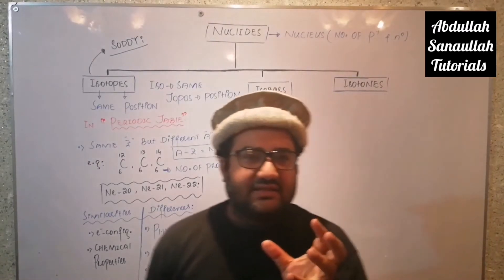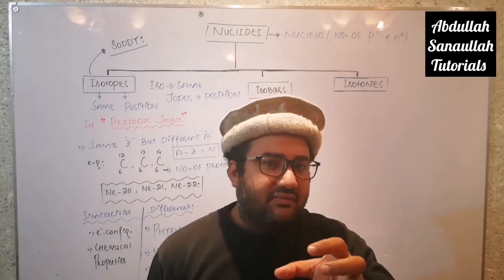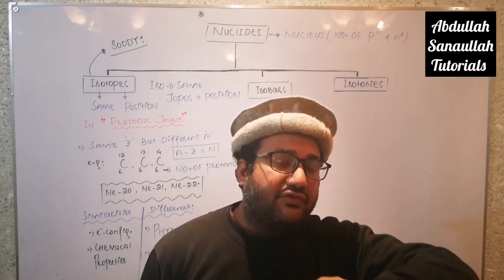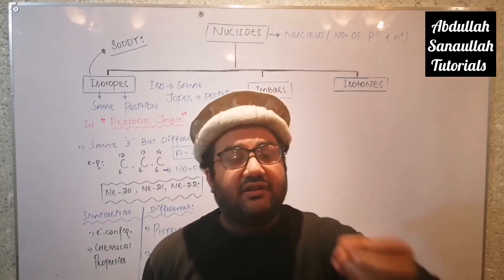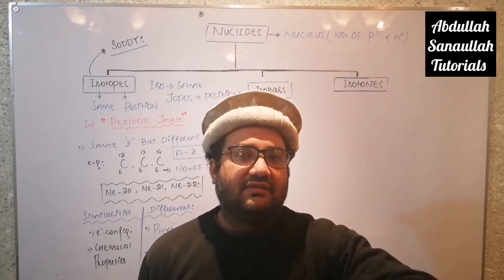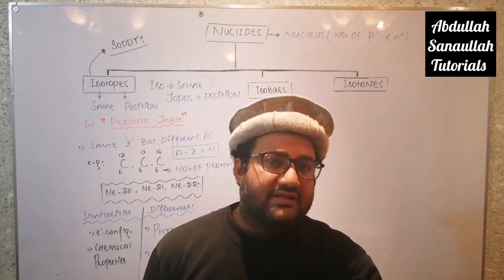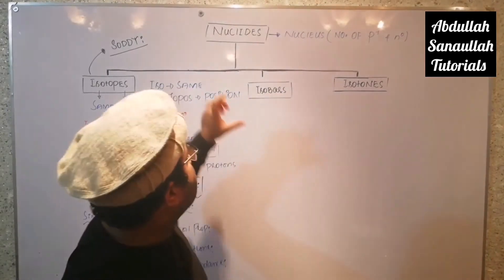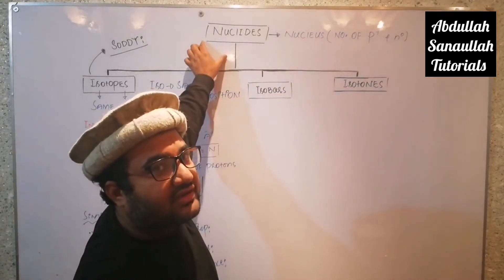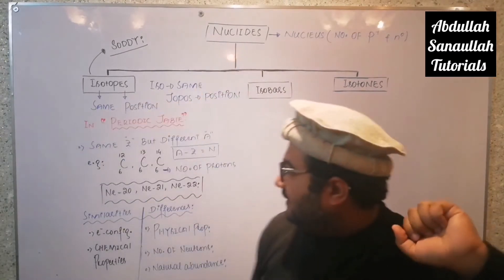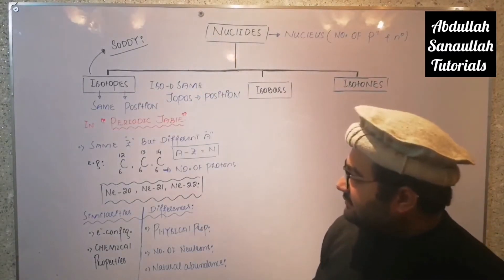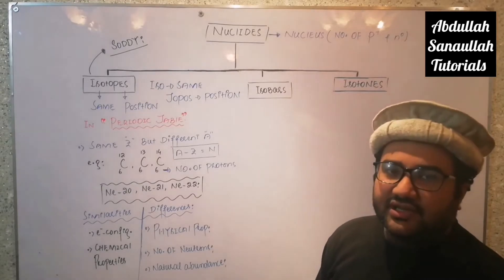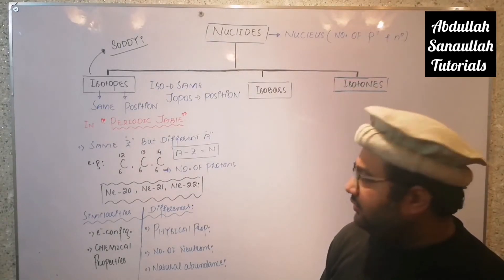The same number of protons is the similarity within the nucleus, while the different number of neutrons is the difference within the nucleus — and that is basically what nuclides are all about. Another example: neon has three isotopes — neon-20, neon-21, and neon-22.